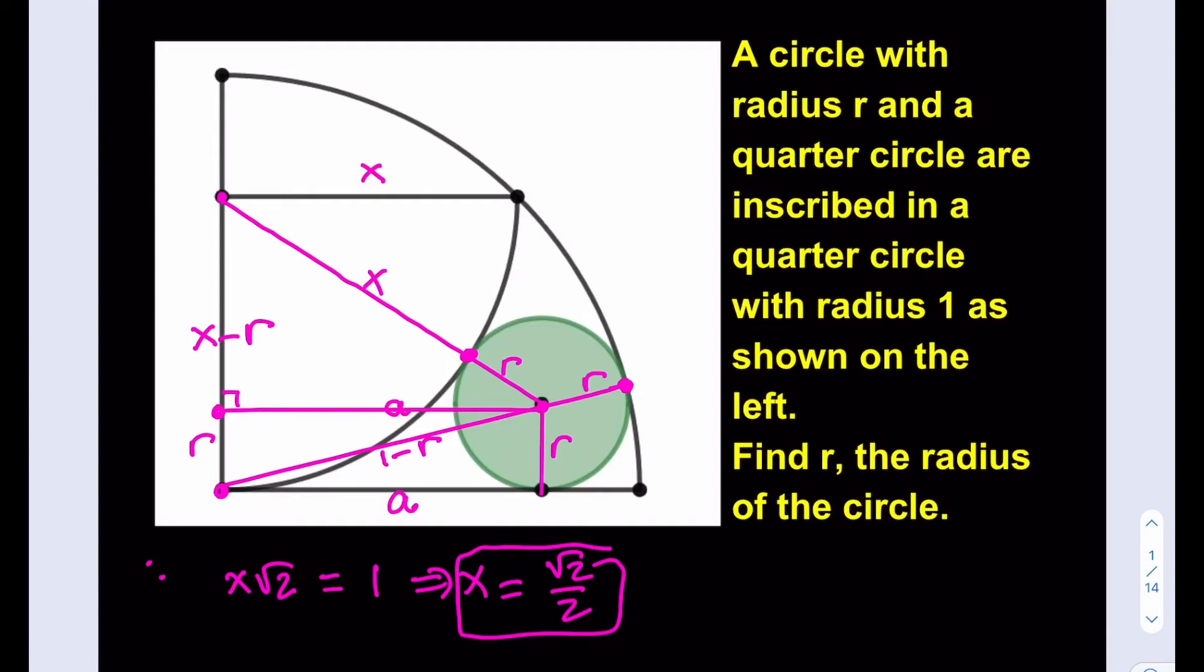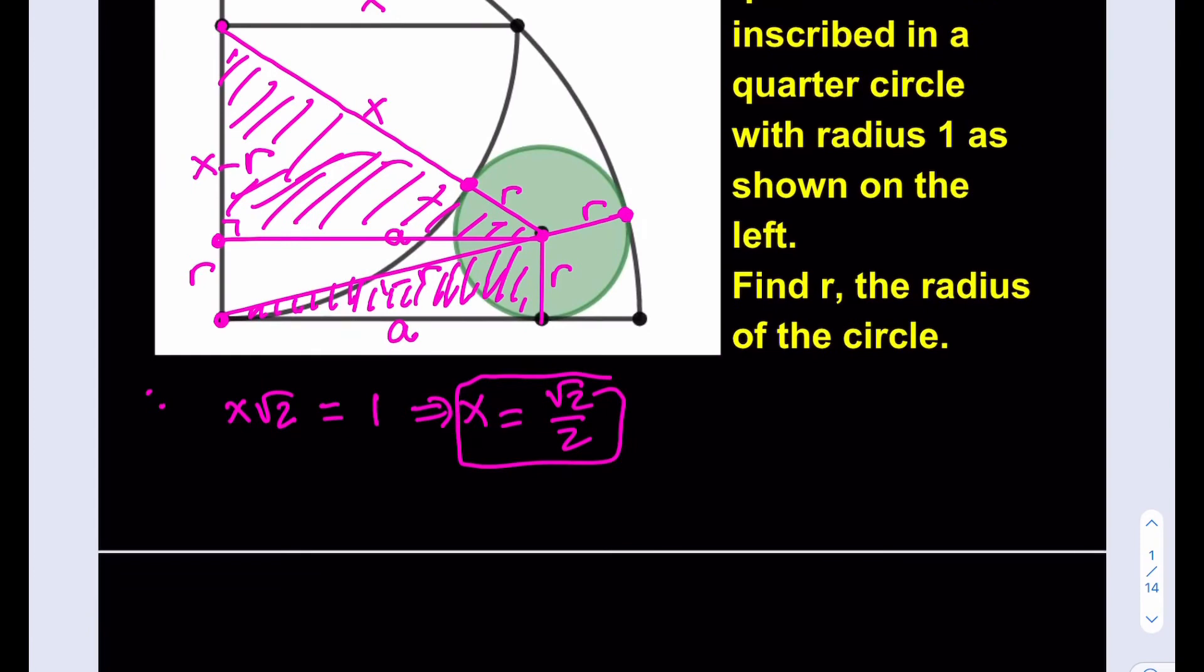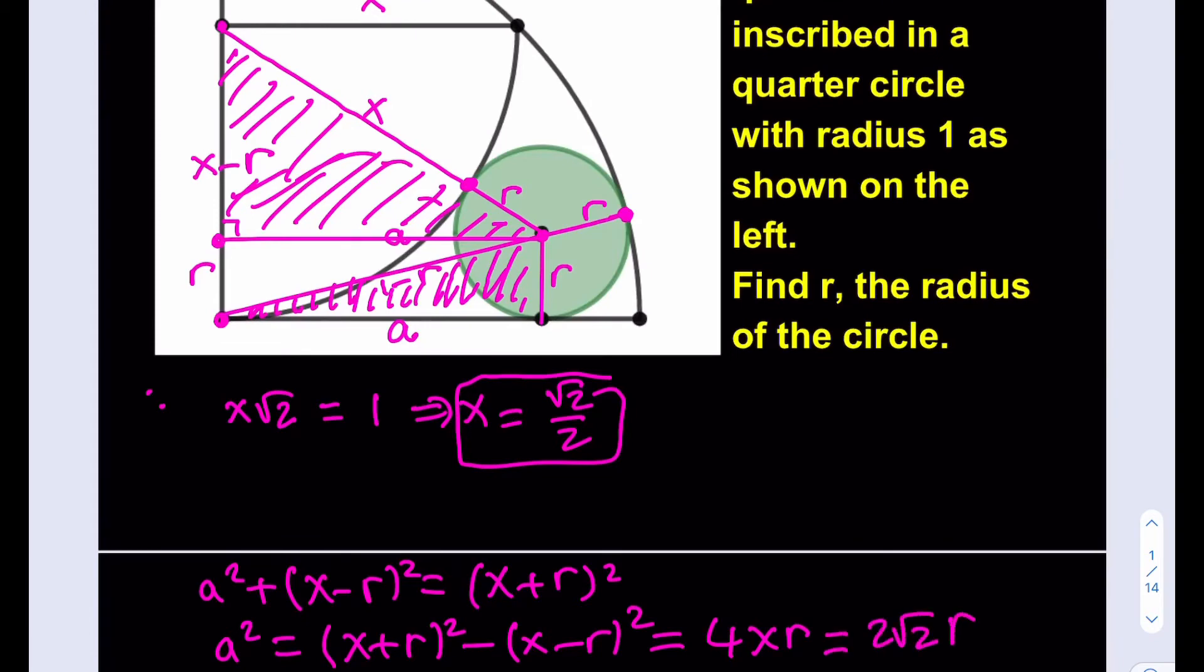We do have two right triangles here. I'm going to go ahead and shade them. Those are the two right triangles that I will be using. Now the top one gives me a squared plus x minus r squared is equal to x plus r squared. As you know, the hypotenuse is the sum of the two radii here. If you subtract these two quantities, you're going to get 4xr. And we know that x is equal to root 2 over 2, so I can just go ahead and write this as 2 root 2 r. That basically gives me a squared.